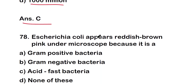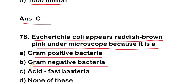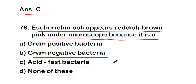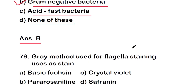Next question: Escherichia coli appears reddish-brown or pink under the microscope because it is — a gram-positive bacterium, a gram-negative bacterium, an acid-fast bacterium, or none of the above? The right answer is option B — it is a gram-negative bacterium, which is why it appears reddish-brown or pink.